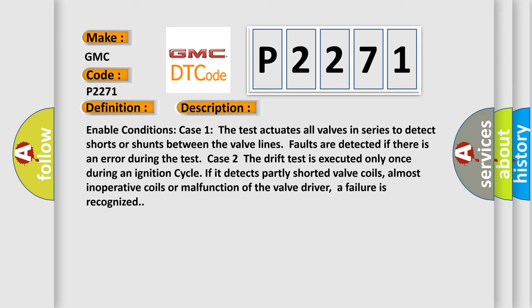Faults are detected if there is an error during the test. Case 2: The drift test is executed only once during an ignition cycle. If it detects partly shorted valve coils, almost inoperative coils, or malfunction of the valve driver, a failure is recognized.